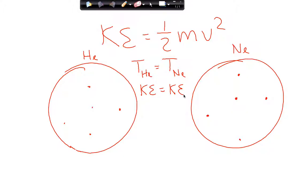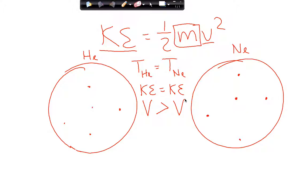But here's the lie we need to debunk — their speeds are not the same. Why? They don't weigh the same. At the same temperature, their kinetic energies are the same, but their velocities are not, because their masses are not the same. Kinetic energy is the product of mass and velocity squared. So which atoms are moving faster — helium or neon? The helium atoms are moving faster.